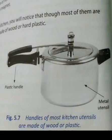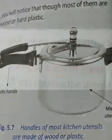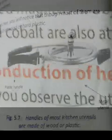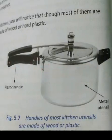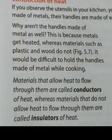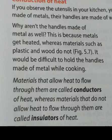The handles of most kitchen utensils like a pressure cooker are made of wood or plastic because of the property of metals to conduct heat. When metals get heated, materials like plastic and wood do not get heated, so handles made of metal would be difficult to hold while cooking. Materials that allow heat to flow through them are called conductors of heat, whereas materials that do not allow heat to flow through them are called insulators of heat. Metals are usually conductors of heat, and non-metals such as wood, plastic, glass, bamboo, air, and paper are insulators of heat.